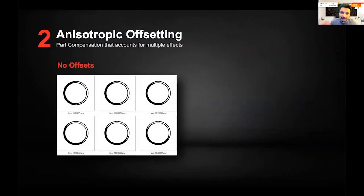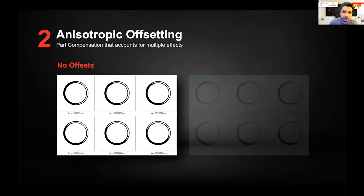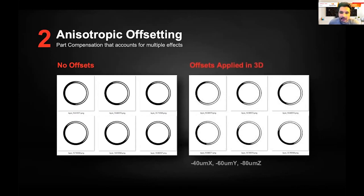In this view — and you might have to squint a bit — you'll see a number of slices with a certain level of black, white, and gray. We've now conducted an anisotropic offset on these slices: 40 microns in X, 40 or 60 in Y, and 80 in Z. You can now see two key fundamental differences.